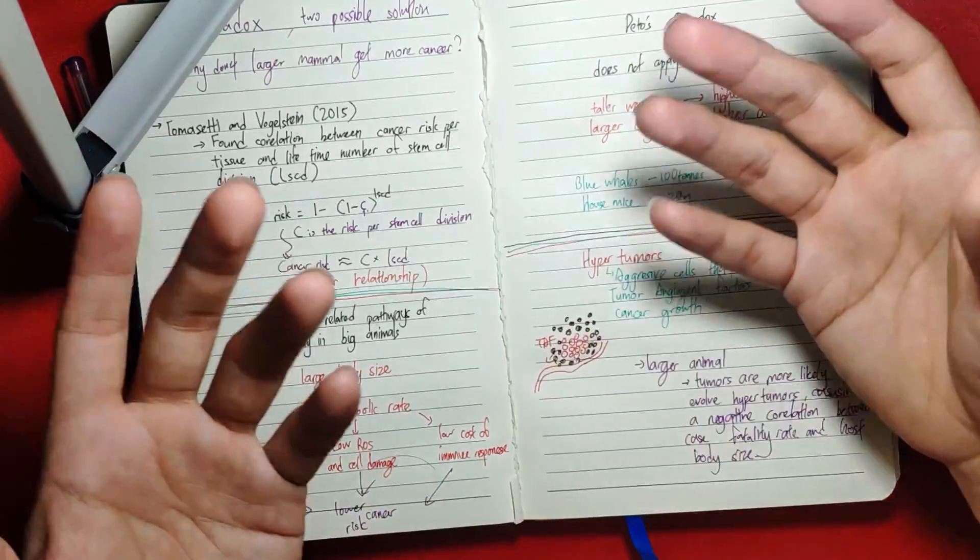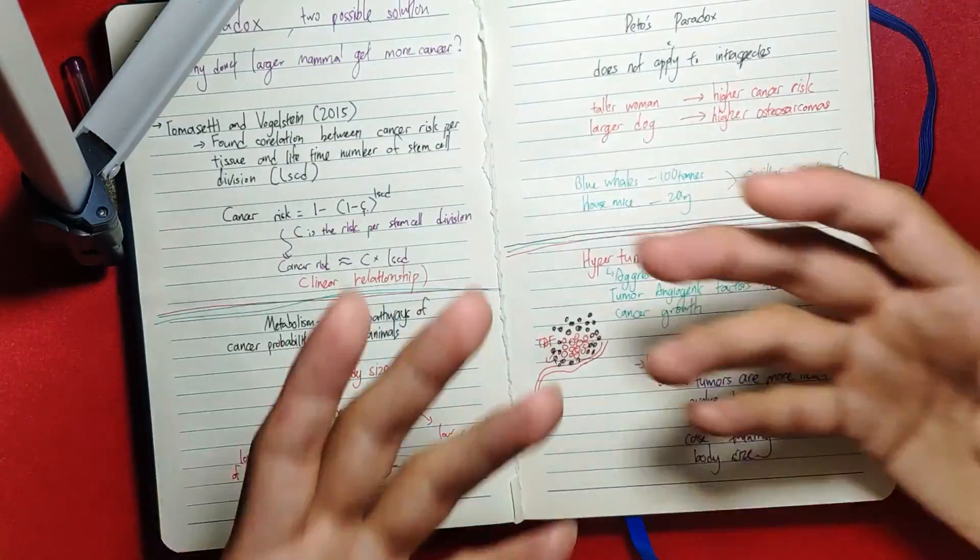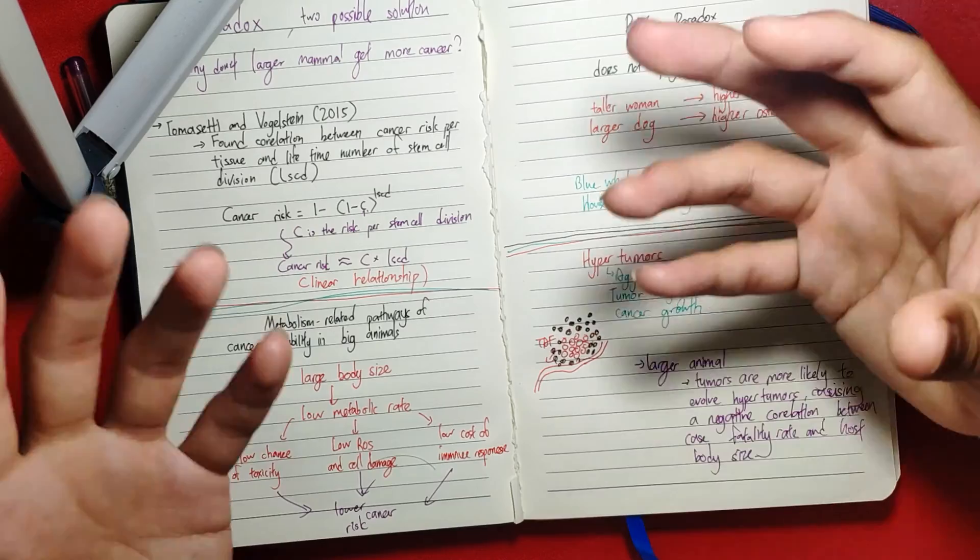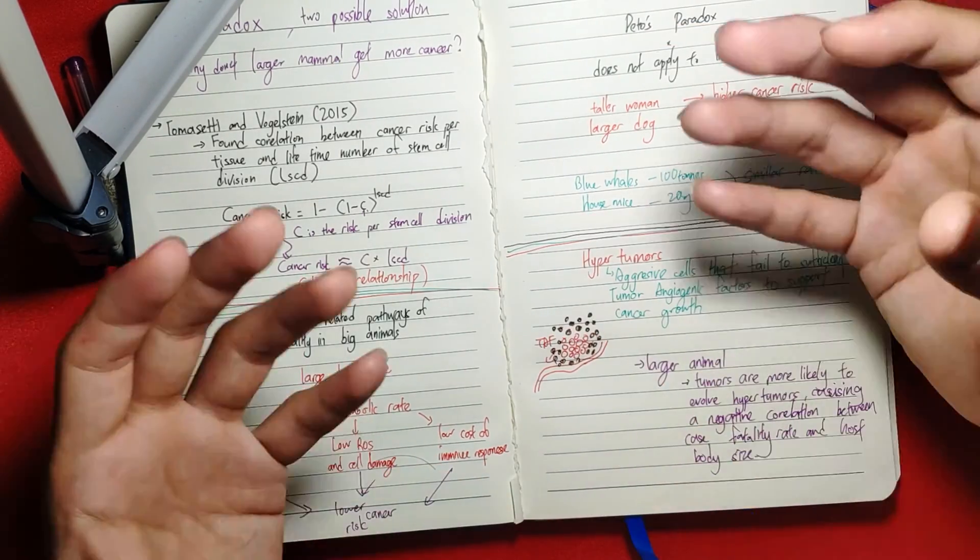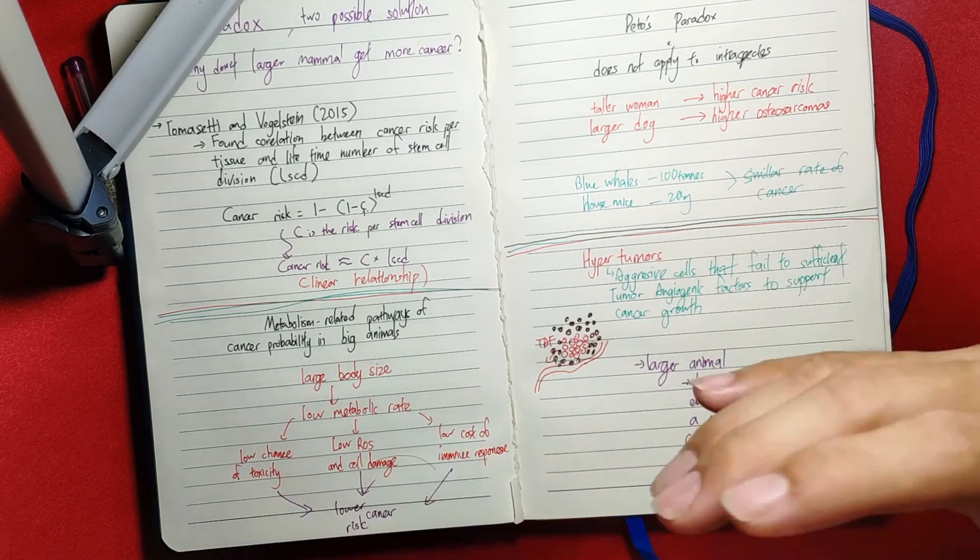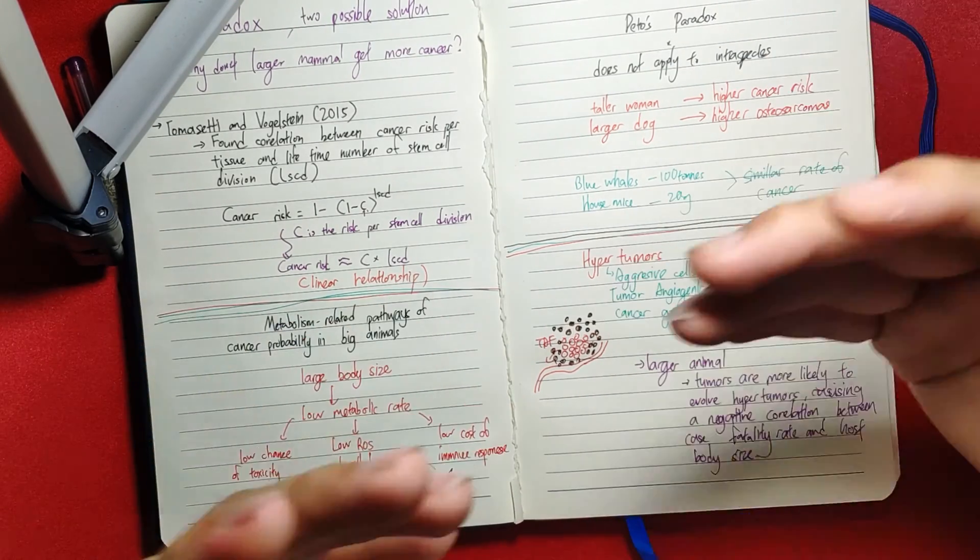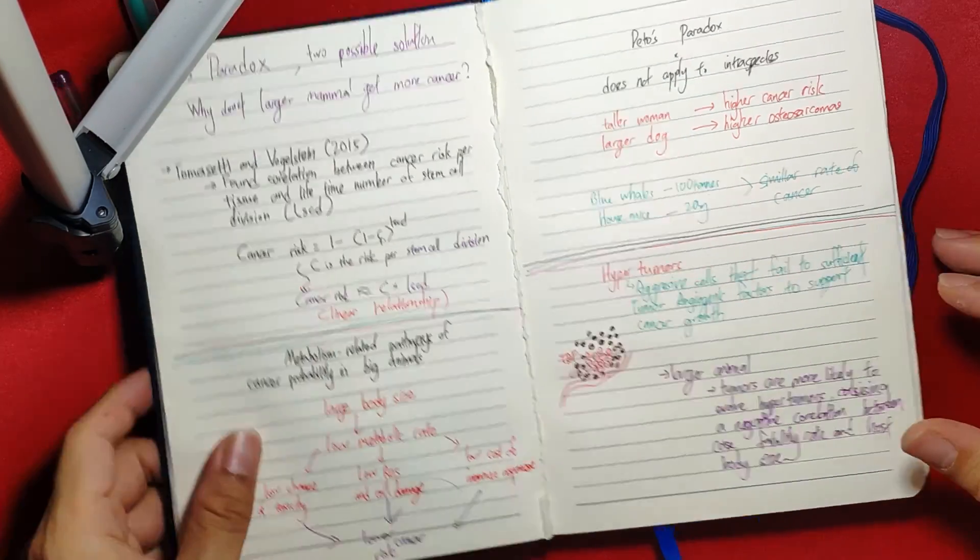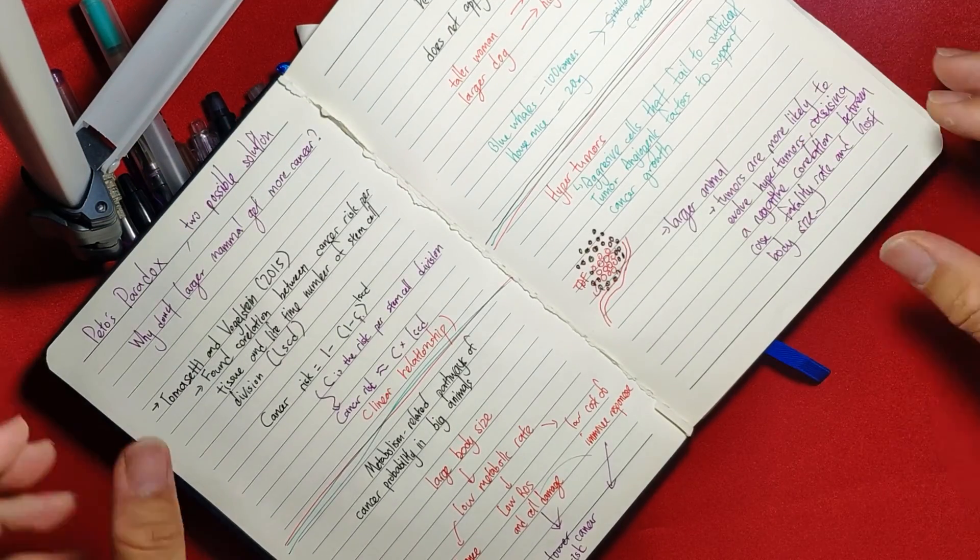You're able to localize the infection and that damage will not spread throughout the whole body, rather than when you are a small animal where you kind of have no choice - if you do something, immediately the whole body is affected.